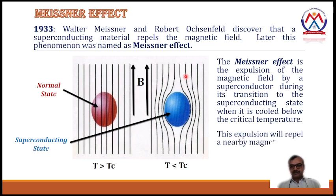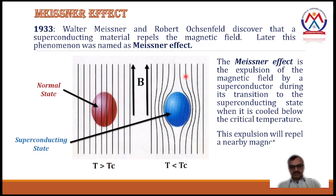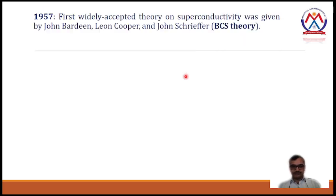This expulsion will repel a nearby magnet. The Meissner effect — the expulsion of the magnetic field by a superconductor when cooled below the critical temperature — discovered by Walter Meissner and Robert Ochsenfeld, is the basis for maglev trains, commonly known as bullet trains. In 1957, the first widely accepted theory on superconductivity was given by John Bardeen, Leon Cooper, and John Schrieffer.